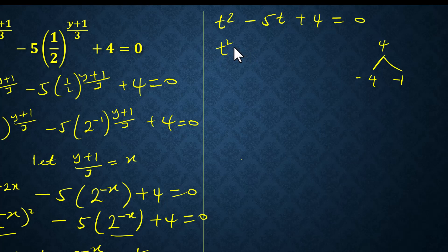So we have t squared minus 4t minus t plus 4 equals zero. This one will be t minus 4, t minus 1 equals zero.